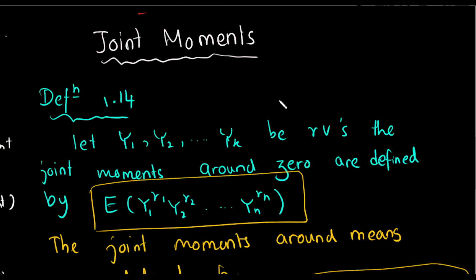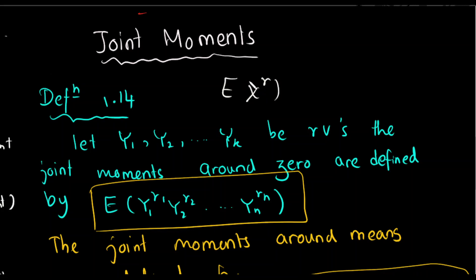We can compute the joint moments and the practical side. From one random variable, we can derive the joint movements. In the random variables, it is required to find the expectation, which can be done using the moment generating function.